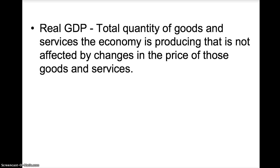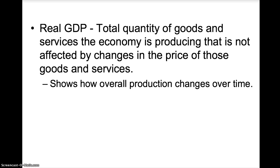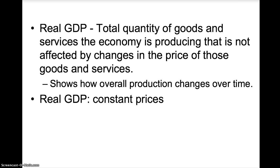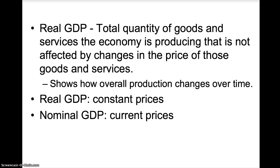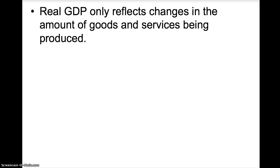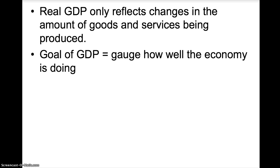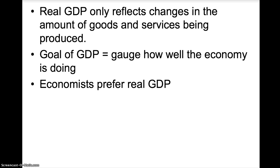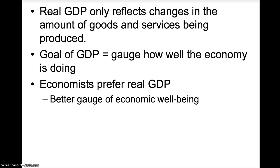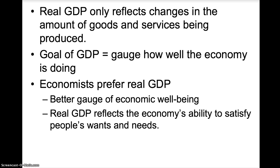Real GDP is the total quantity of goods and services the economy is producing, and it is not affected by changes in the price of those goods and services. Real GDP shows how overall production changes over time because it is a measure of quantity, and it is calculated with constant prices. Nominal GDP is calculated with current prices. Since prices stay constant with real GDP, it only reflects change in the amount of goods and services being produced. Economists prefer real GDP over nominal GDP because it is a better gauge of economic well-being, since it reflects the economy's ability to satisfy people's wants and needs.